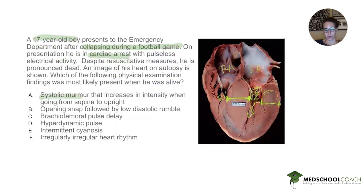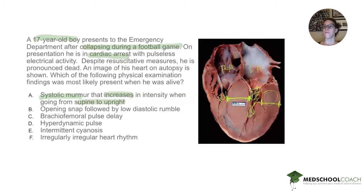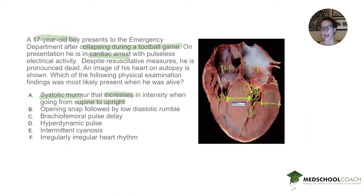Looking at choice A — a systolic murmur that increases in intensity when going from supine to upright: what happens when you go from supine to upright? Preload in the left ventricle decreases, because more blood pools lower in the body and less returns to the heart. This decreases preload, which increases outflow tract obstruction, which increases the murmur. So the answer is A.